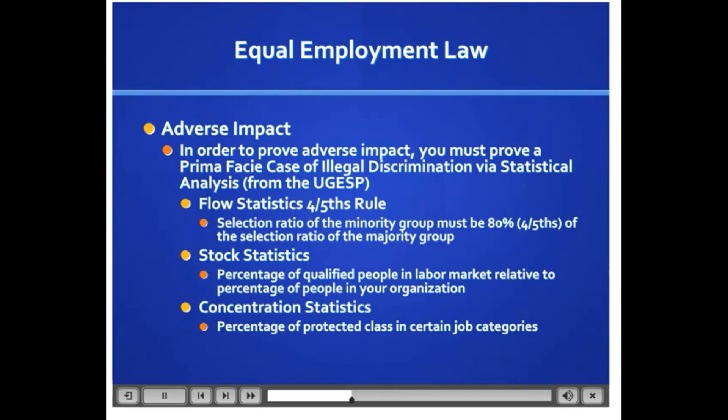It's adverse impact if we're using criteria that seems stringent and it's unnecessarily stringent. The key case for this was Griggs v. Duke Power. In this circumstance, Duke Power had decided they wanted to use a high school diploma to prescreen for some jobs. The problem was that, historically, people could do this job without a high school diploma. So it's not unreasonable to say you need a diploma, but historically no one has ever needed a high school diploma to do this job — they've been able to do it successfully without one.